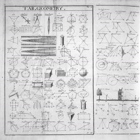The earliest recorded beginnings of geometry can be traced to early peoples who discovered obtuse triangles in the ancient Indus Valley and ancient Babylonia from around 3000 BC. Early geometry was a collection of empirically discovered principles concerning lengths, angles, areas, and volumes, which were developed to meet some practical need in surveying, construction, astronomy, and various crafts. Among these were some surprisingly sophisticated principles, and a modern mathematician might be hard put to derive some of them without the use of calculus.